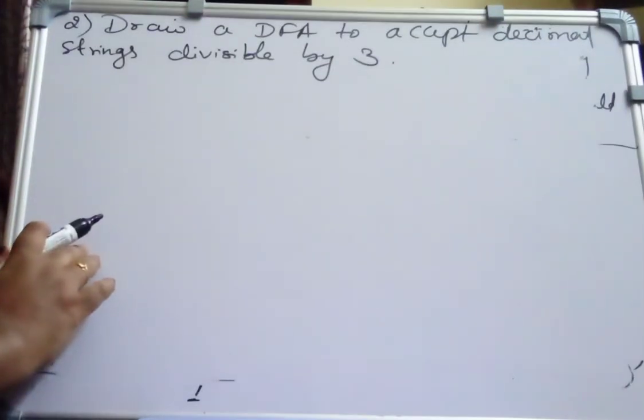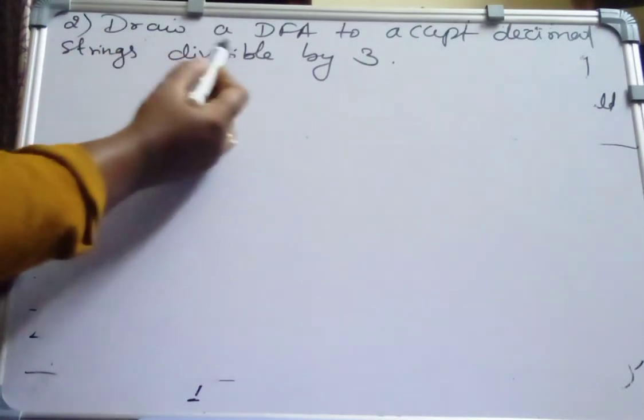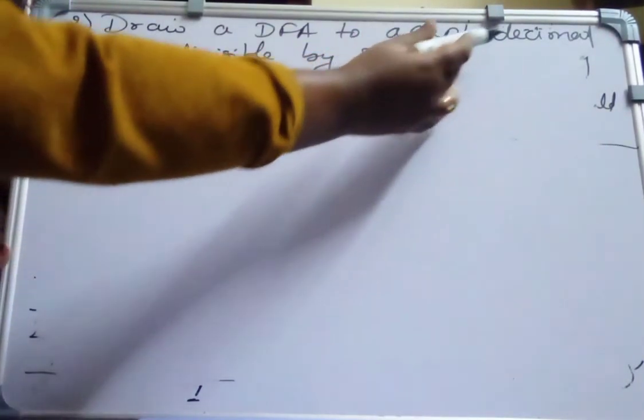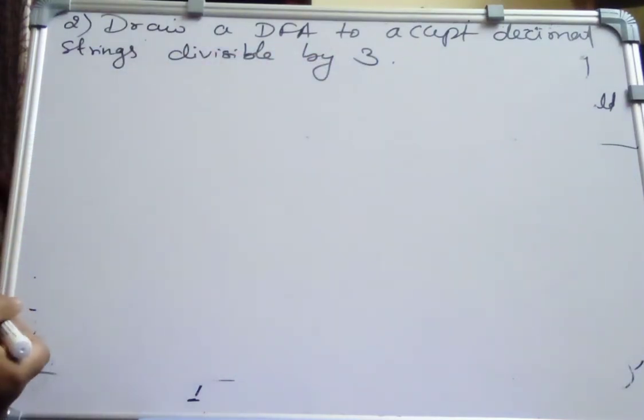Dear students, I am going to discuss the second problem on divisible by K problems of DFA. That is, draw a DFA to accept decimal strings divisible by 3.